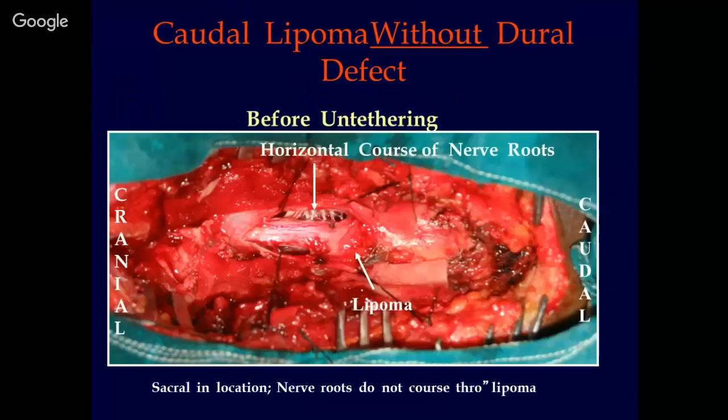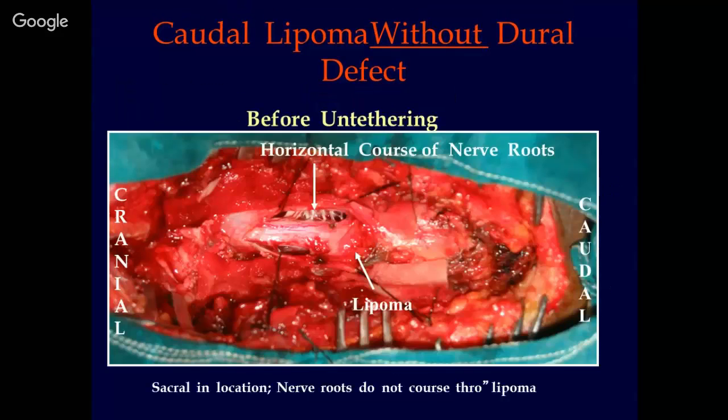This is the intraoperative photograph of that patient. Notice the sacral location of the lipoma, the horizontal course of the nerve roots prior to sectioning, and after excision of the lipoma notice the ascent of the conus — upward migration of the cord — as well as the nerve roots resuming their normal course.